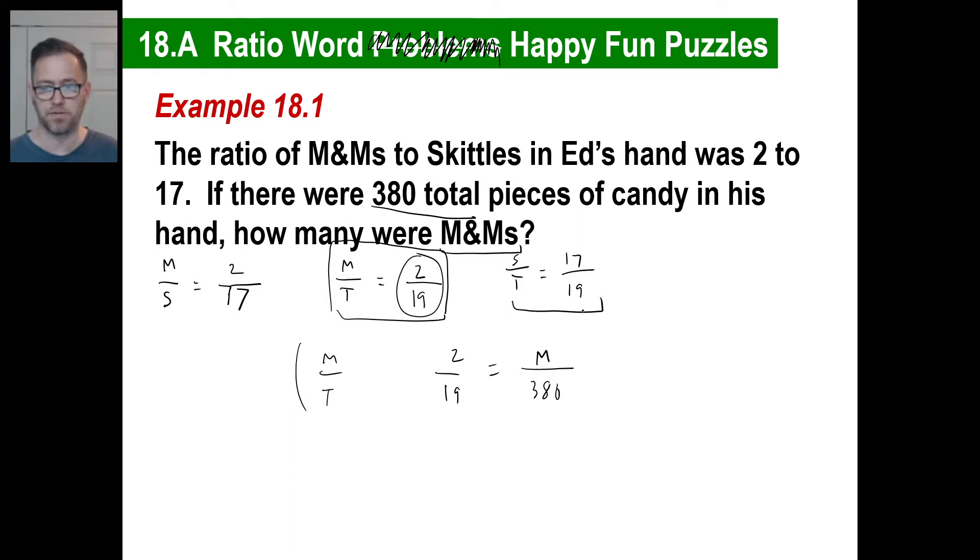We just take this one and we go, okay, M&Ms to total. That's going to be 2 to 19, which equals 380. That's the actual number he has in his hand. How many were M&Ms? We don't know. Boom. There you go. And this is your setup. And all you need to do now is just cross multiply to solve. Now by the way, you might look at this and go, wait, 19 times what gives me 380? Well, 19 times 2 gives you 38. So 19 times 20 gives you this. So 2 times 20 would give you 40. So there are 40 M&Ms.